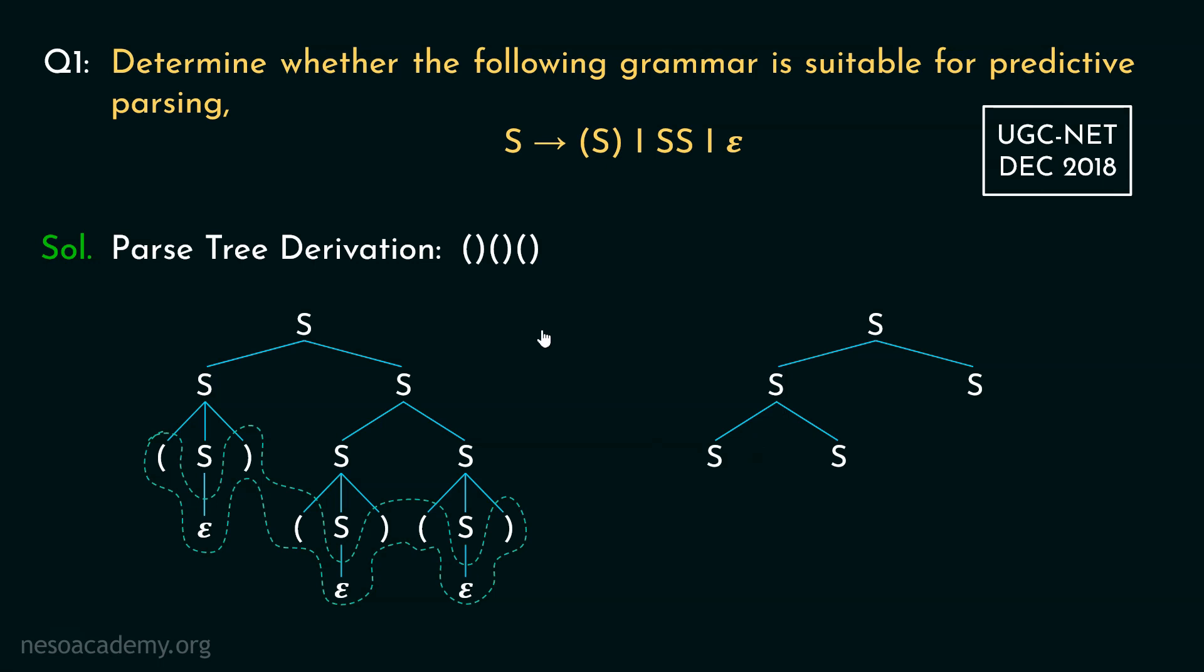Now applying the first rule, that is, S can be written as S enclosed in parenthesis. From this S, we derive the left parenthesis, S and the right parenthesis, that is, the last pair of parenthesis. Using the same rule, this S will help us derive the first pair and this one will derive the second pair.